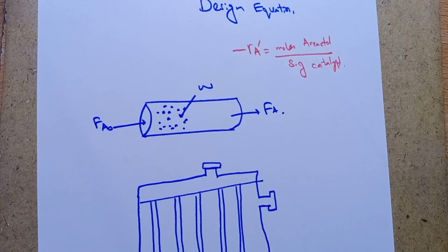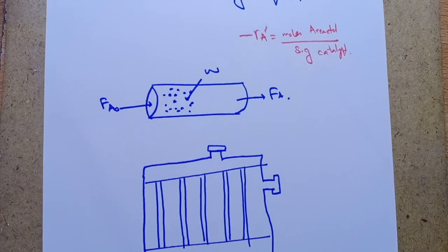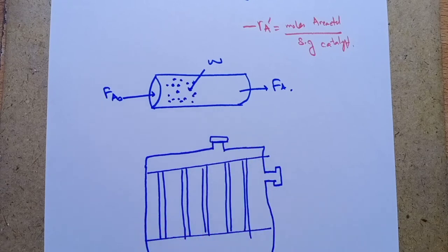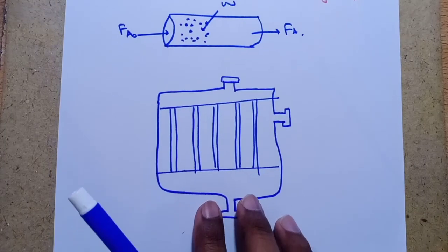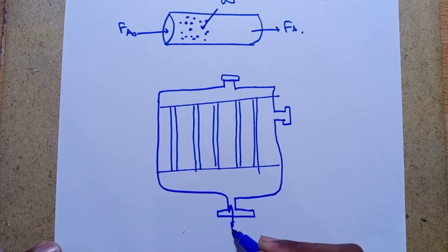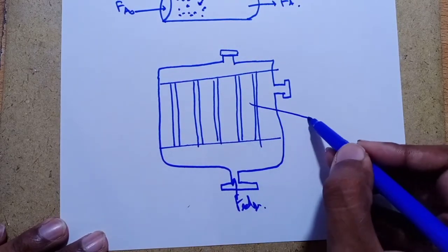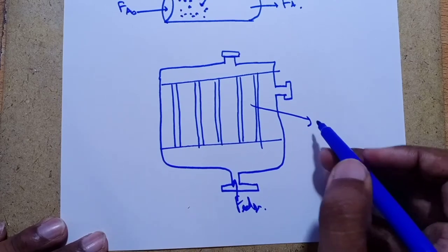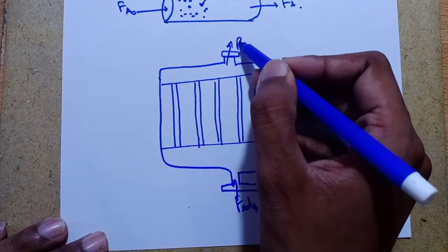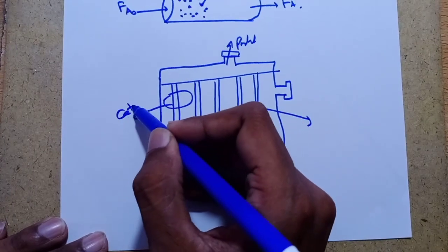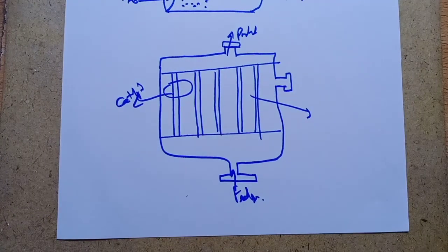The reactor volume that contains the catalyst is of secondary significance in industrial reactors. This is a packed bed reactor: the feed gas enters, this is called the coolant side with baffles, this is the product gas, and this is used as catalyst.